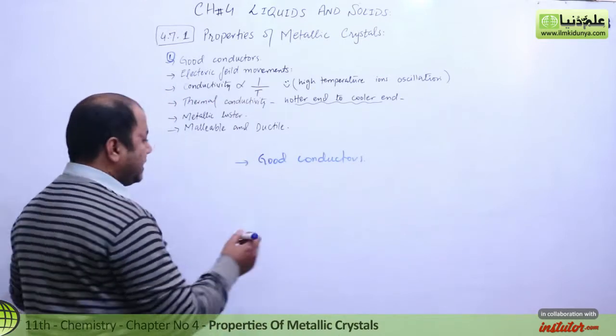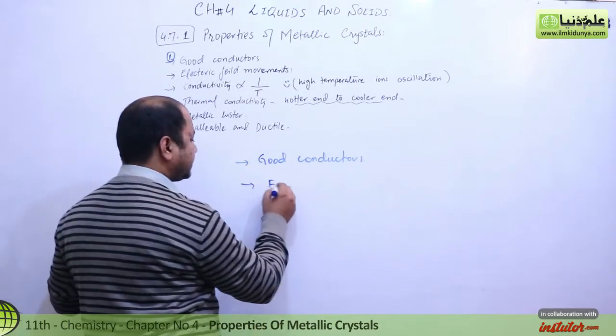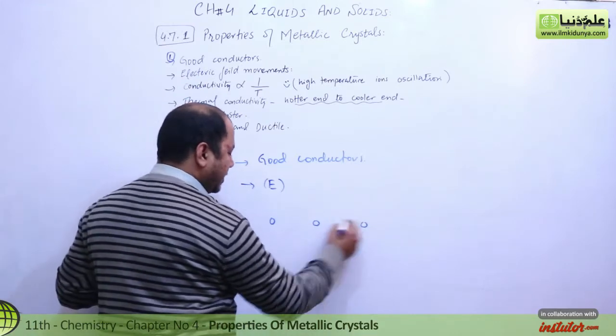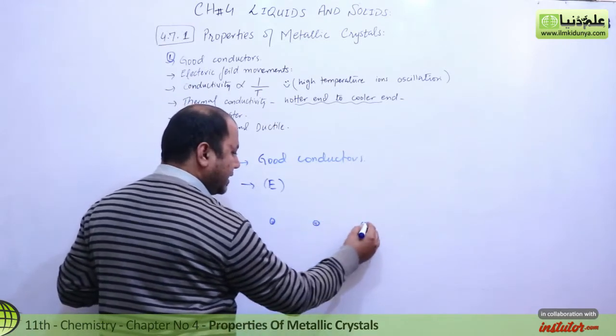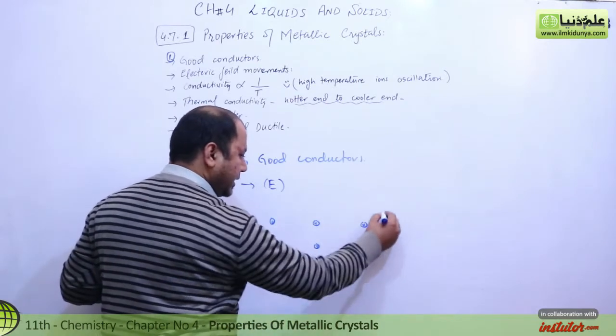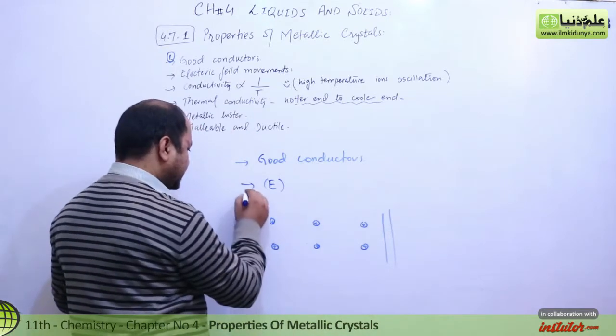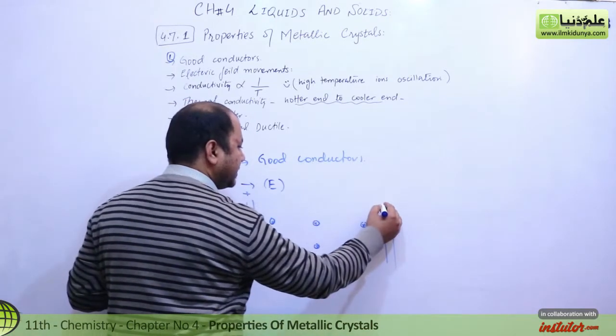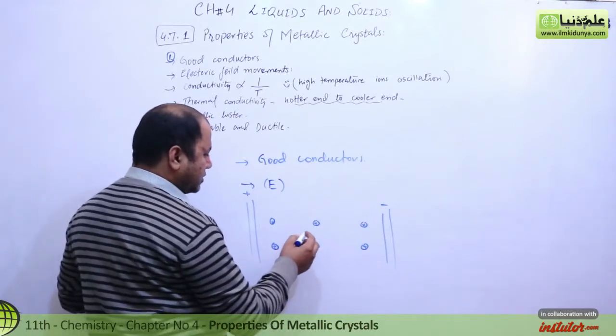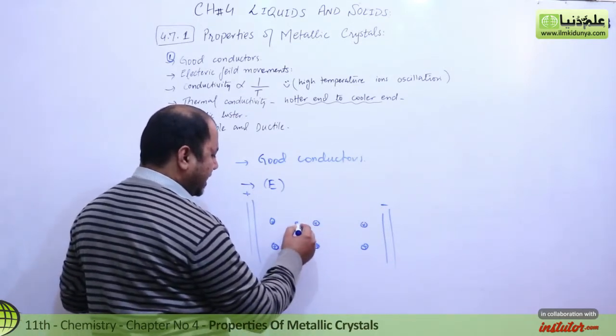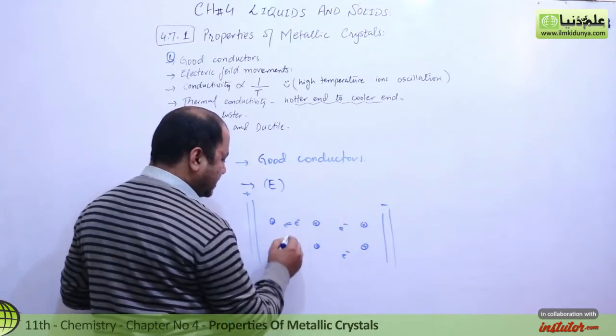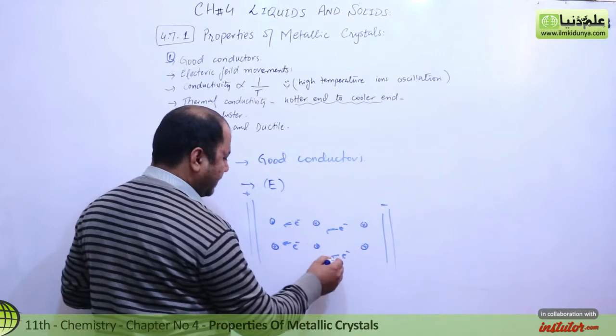When an electrical field is applied, let's say we have a metallic lattice with a cathode and an anode. The electrons, being negatively charged particles, will start moving in the direction of the anode.